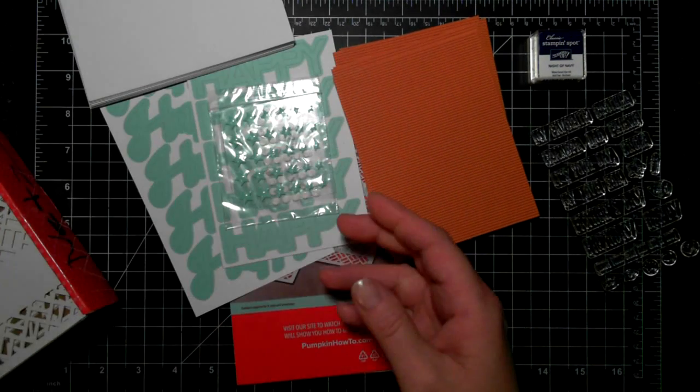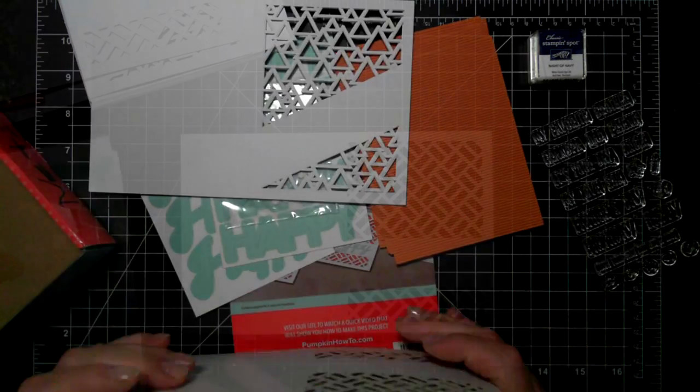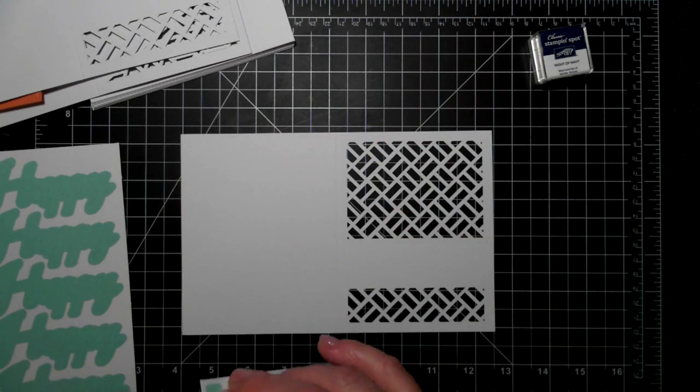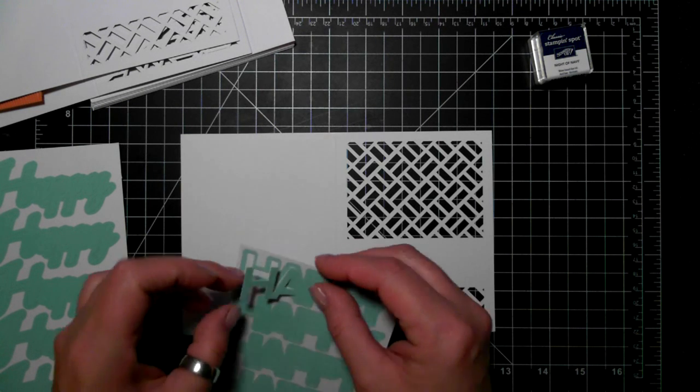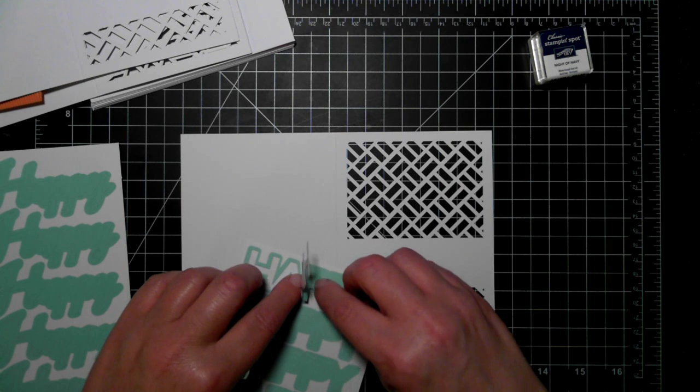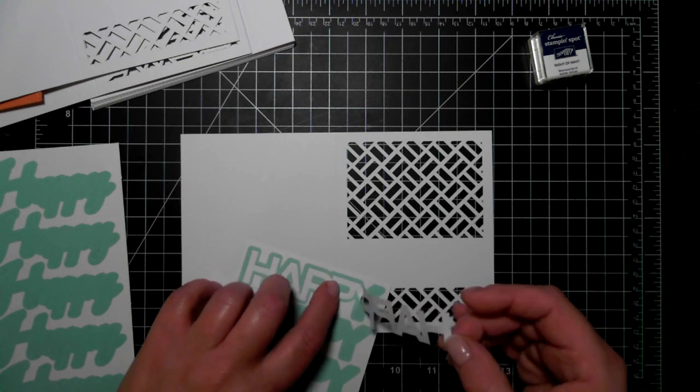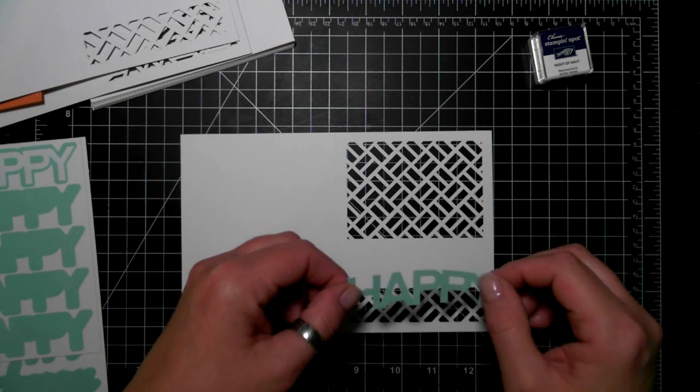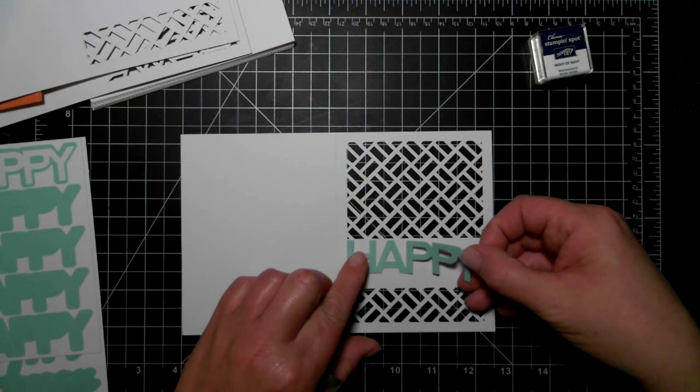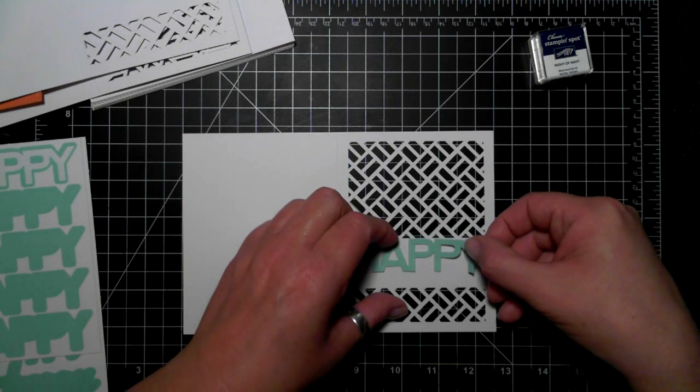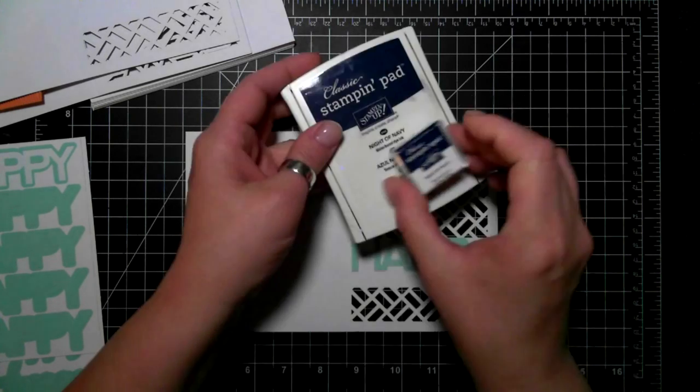Today we had envelopes and Pumpkin Pie orange cardstock that's corrugated, and these really cool see-through card fronts. The directions suggest that you take one of these stickers and put it on the card, then use the stamp set to wish the recipient a happy birthday or happy Father's Day or what have you.